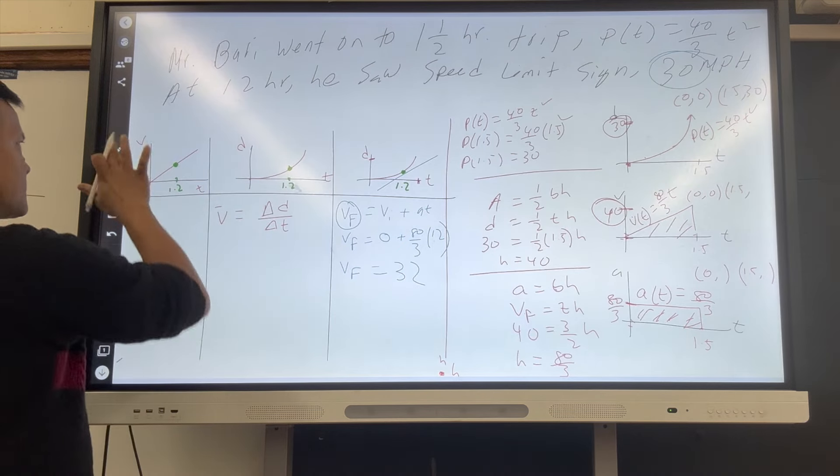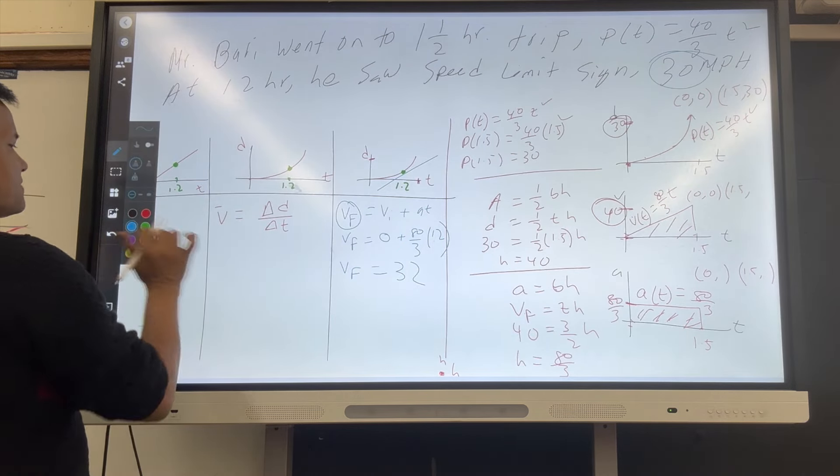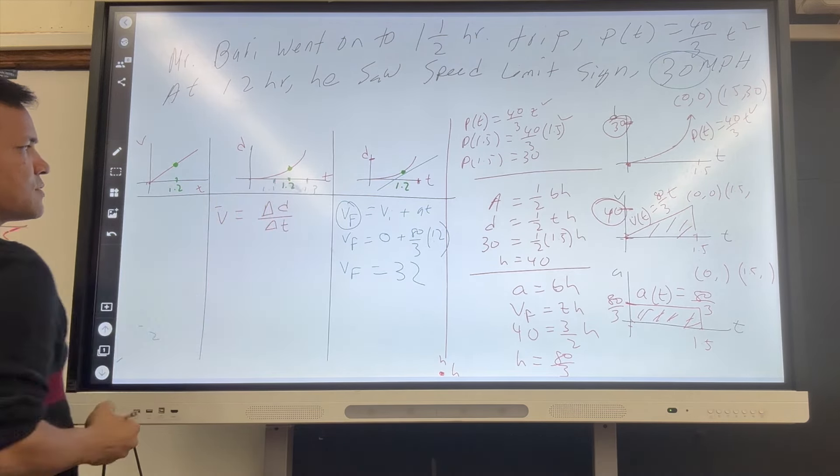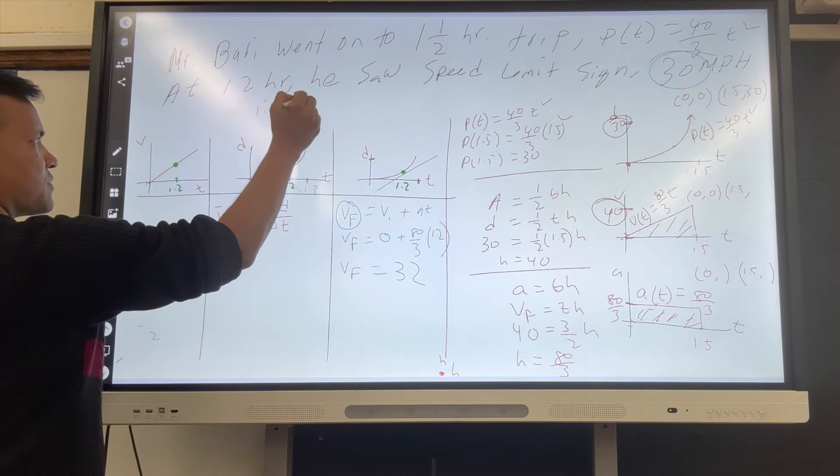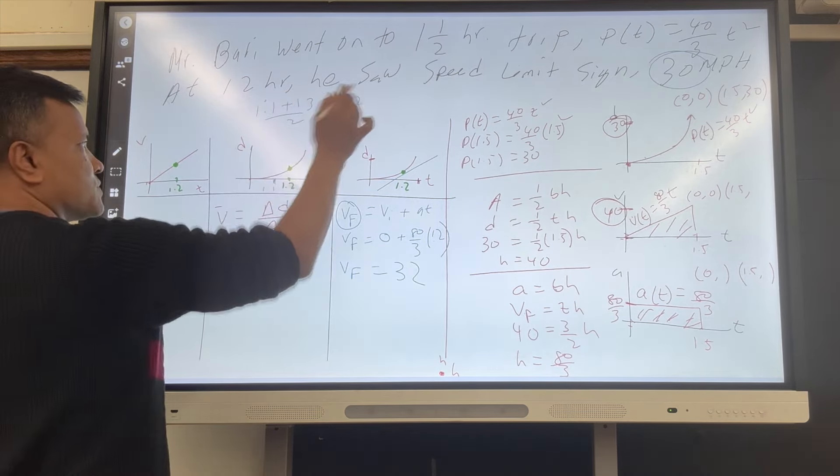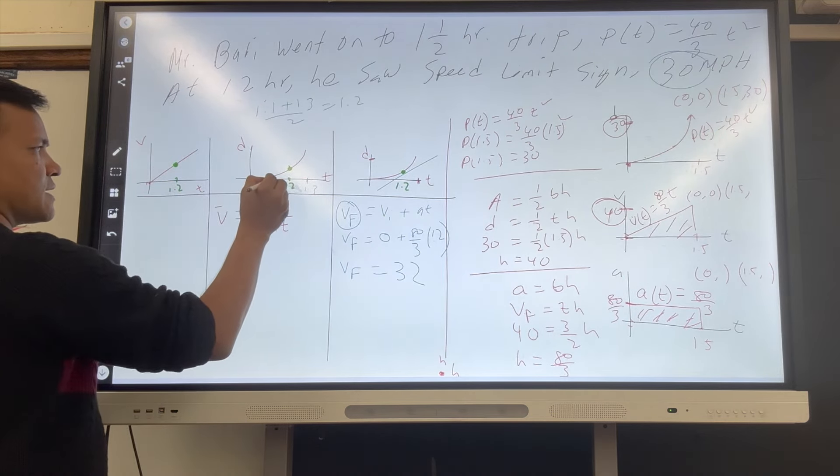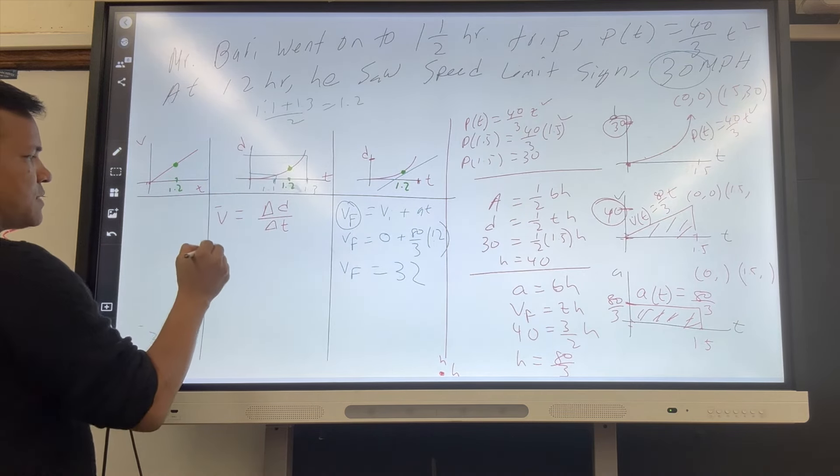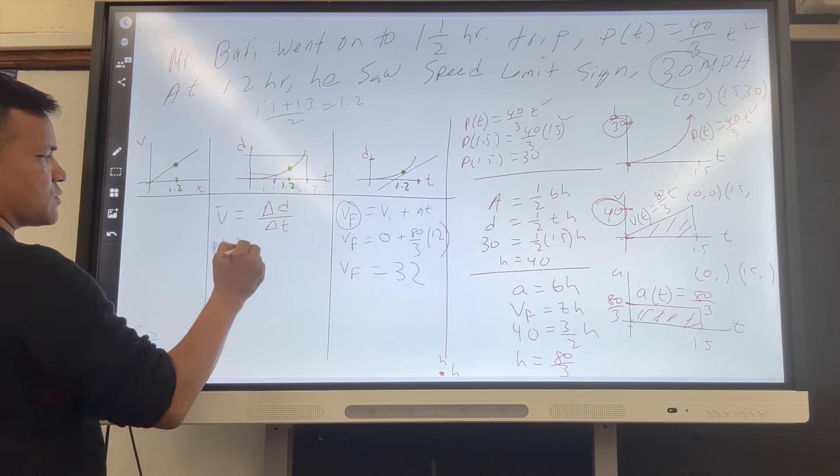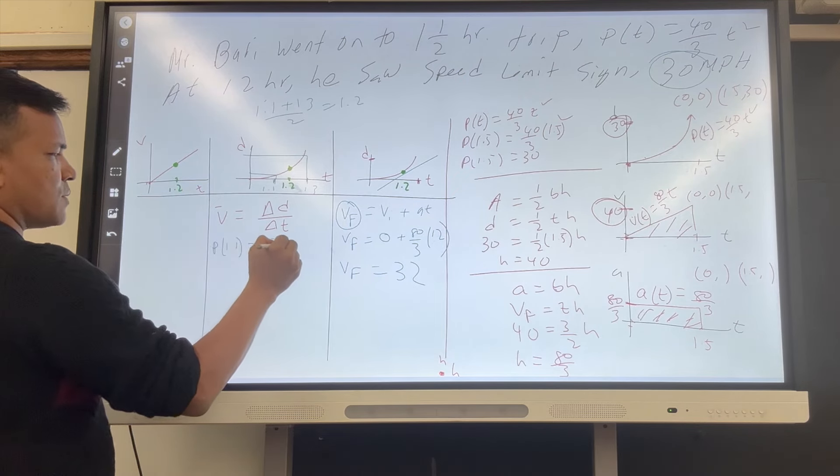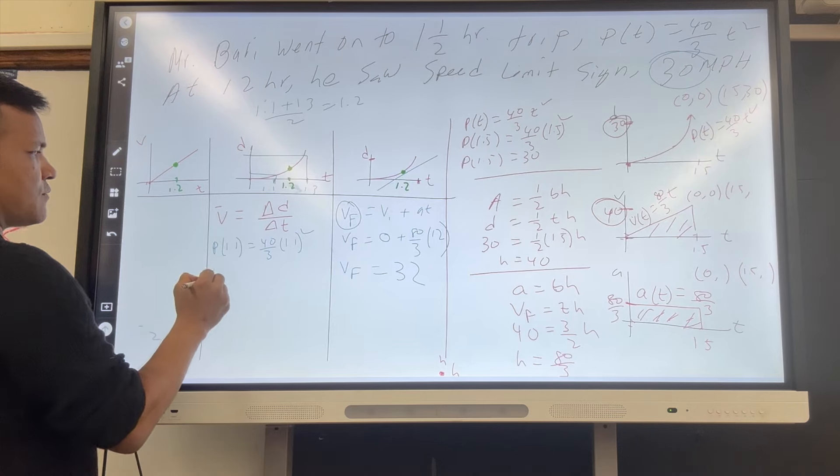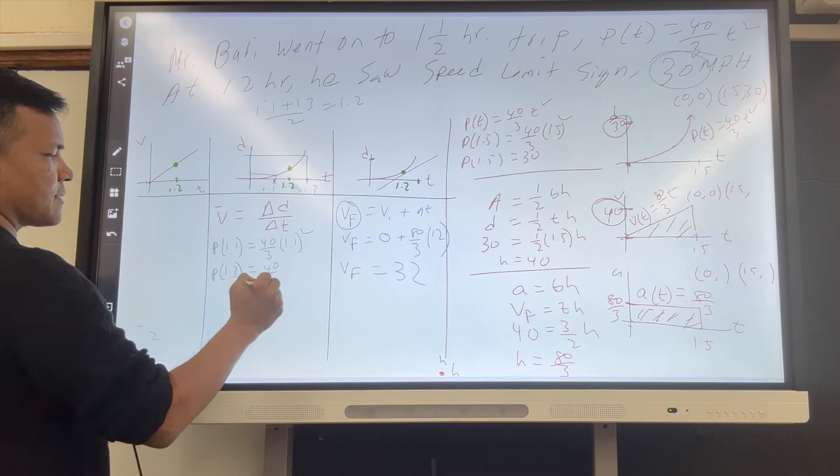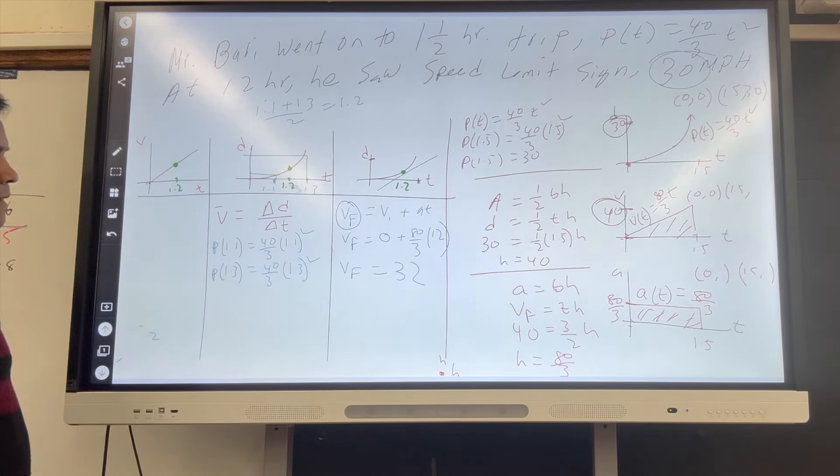We have to use the midpoint. What is the midpoint? Let's say this is 1.1. Then, this is 1.3. 1.1 plus 1.3 divided by 2 is 1.2. So we have to find the distance over here, the distance over here. P of 1.1 is equal to 40 over 3 times 1.1 squared. And P of 1.3 is equal to 40 over 3 times 1.3 squared.